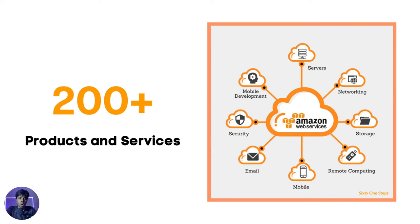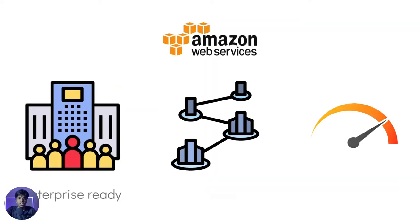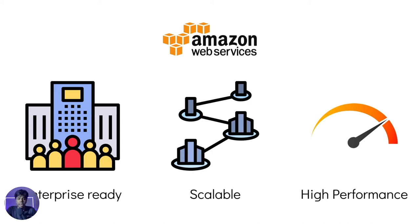With over 200 plus products and services, AWS has almost everything that you need. This can cover things from networking, storage, mobile applications, Internet of Things, security, and more. If you look at the list of all the products AWS has, it covers so many different domains and features that you might want to implement in your application. AWS is enterprise-ready, meaning large enterprises can easily adopt its services, and it is inherently scalable.